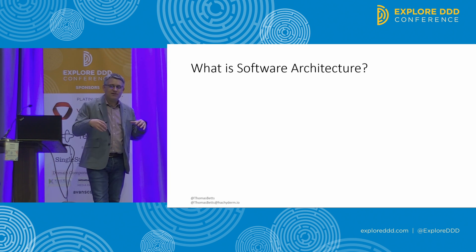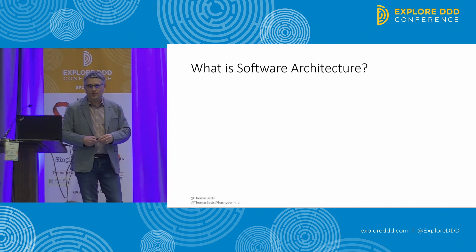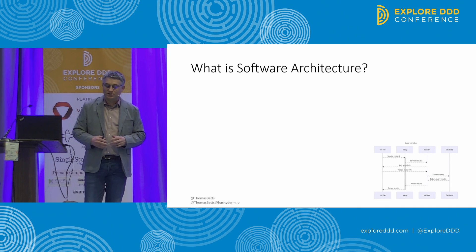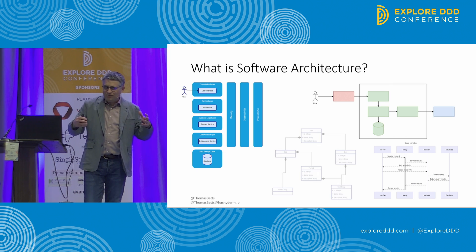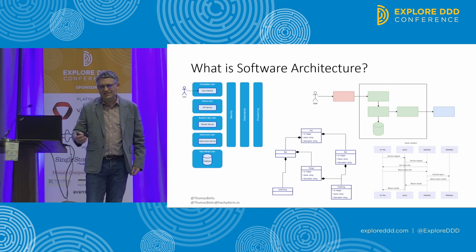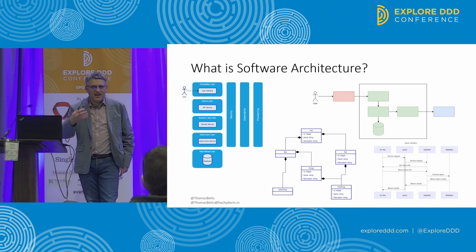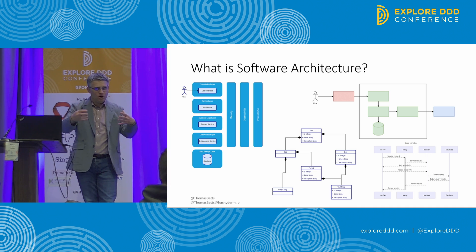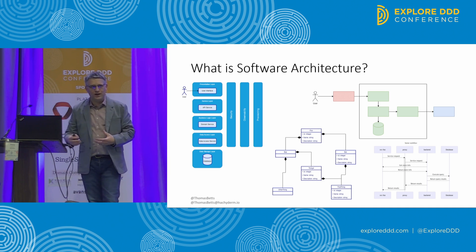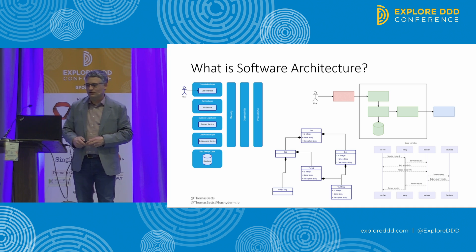But I'm at a software conference, Explore DDD. I figured I'd ask technical people, so I asked some other attendees for examples of software architecture. They showed me diagrams, and I guess that's fine, but it's just a representation — it's not the actual architecture. We don't have that physical building to point at.